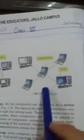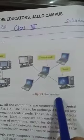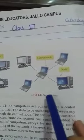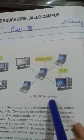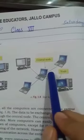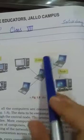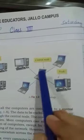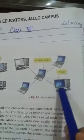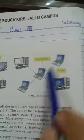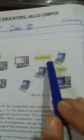The next is star topology. This is star topology — it is like a star. There is a central node which provides the information to the other computers.